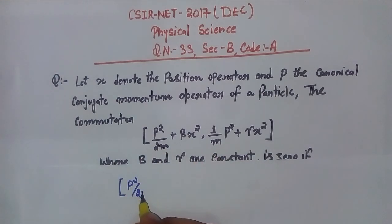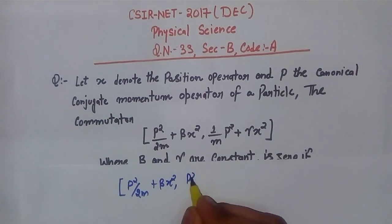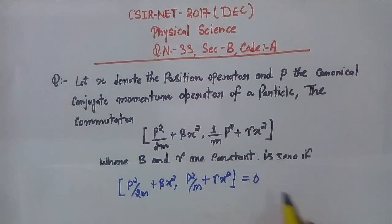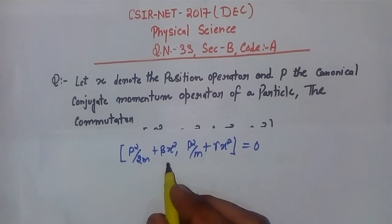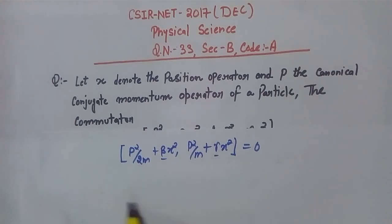So the commutator is [P²/2m + βX², P²/m + γX²] = 0. This is given. Based on this, we will find the relation between γ and β. Now for this question, we expand: [P²/2m, P²/m]